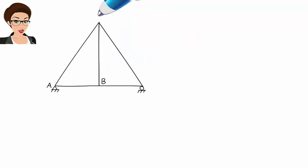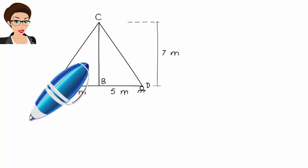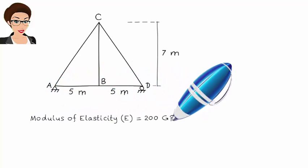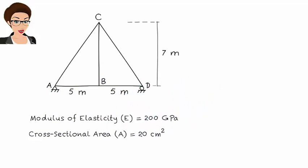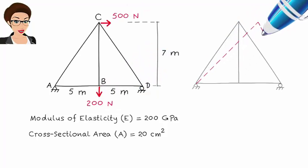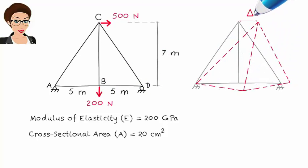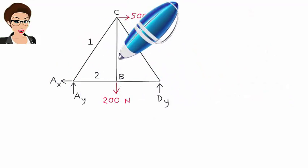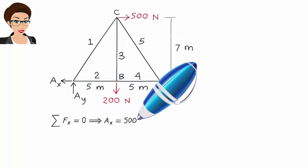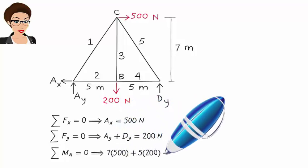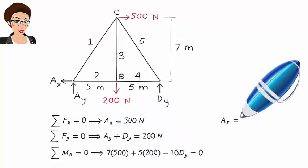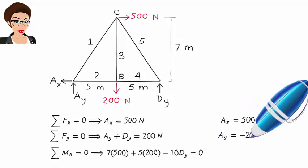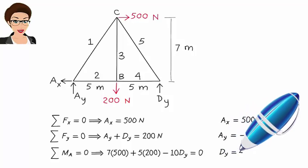Consider the following truss structure. The members are made of structural steel with a modulus of elasticity of 200 gigapascals. All members have the same cross-sectional area of 20 square centimeters. The truss is subjected to two concentrated loads as shown. We wish to determine horizontal displacement at c, vertical displacement at b, and horizontal displacement at d. We start by calculating member forces. The support reactions are: Ax equals 500 newtons, Ay equals negative 250 newtons, and Dy equals 450 newtons.